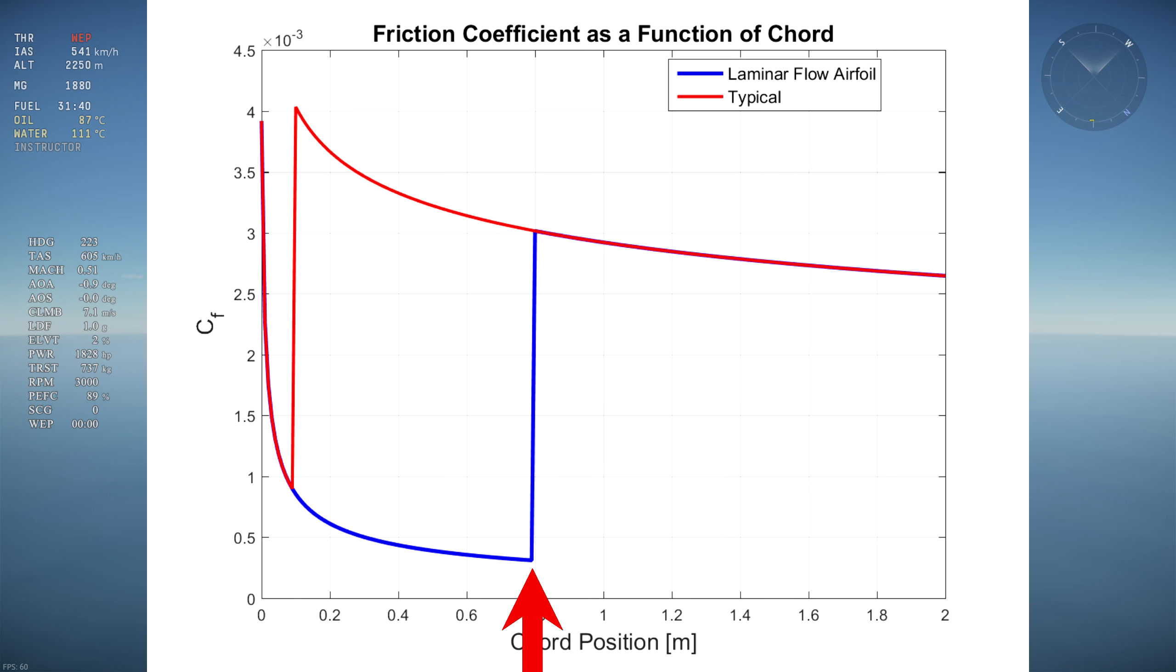At 40% of the chord, the laminar airfoil transitions to turbulent flow, and both have the same skin friction until the end of the wing. The average skin friction coefficient gives the drag coefficient of the wing, so by comparing the area under the curve, we compare the drag coefficient of both airfoils.